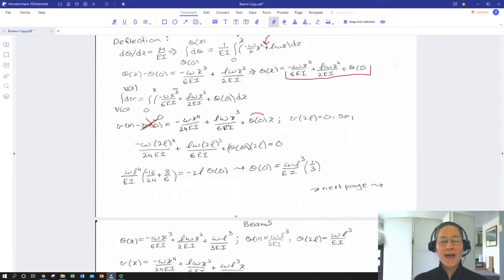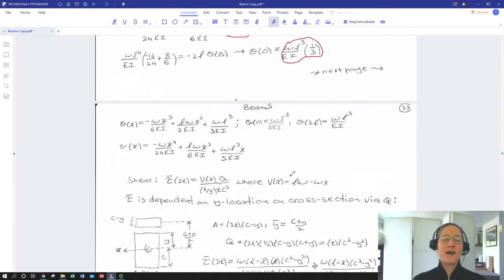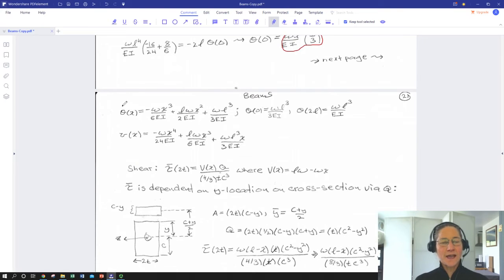So we impose that, we set this whole expression equal to zero. And then we input two L for all of our X's. When we do that, we're able to solve for our deflection angle at zero. And at two L as far as that goes. And so we get an actual value for that. In terms of the load, the length of the span, moment of inertia and our tensile modulus. So we can feed that back into our deflection angle and deflection distance equations. And here we go. Now we have an expression for the deflection angle anywhere. And the deflection, actual deflection anywhere.